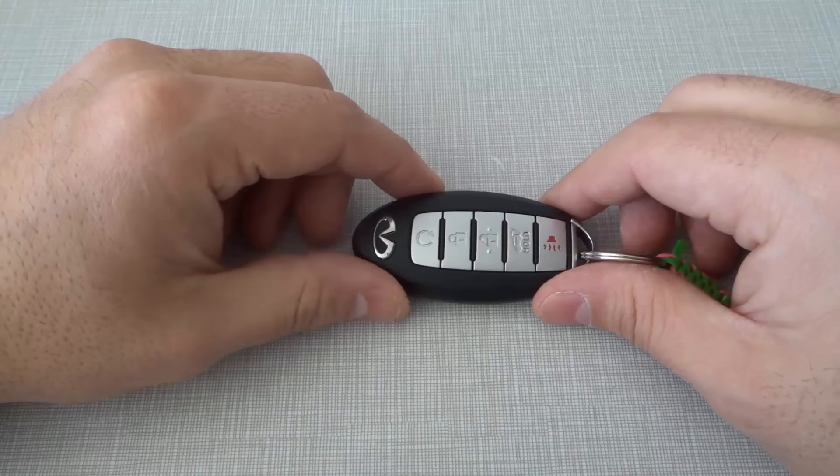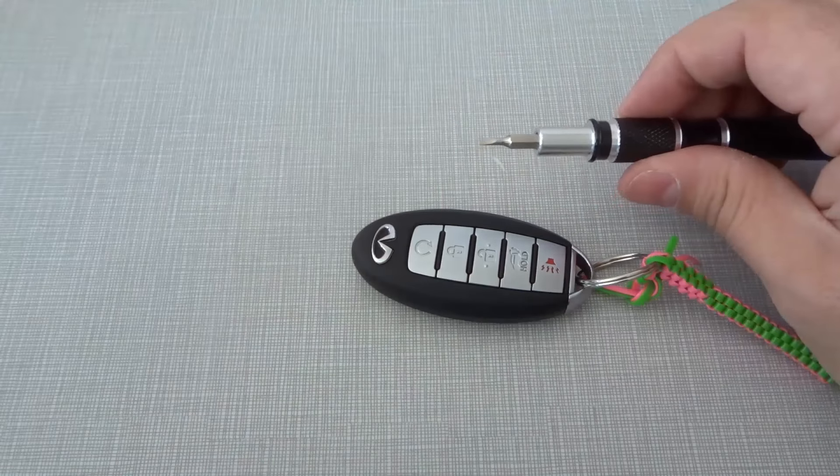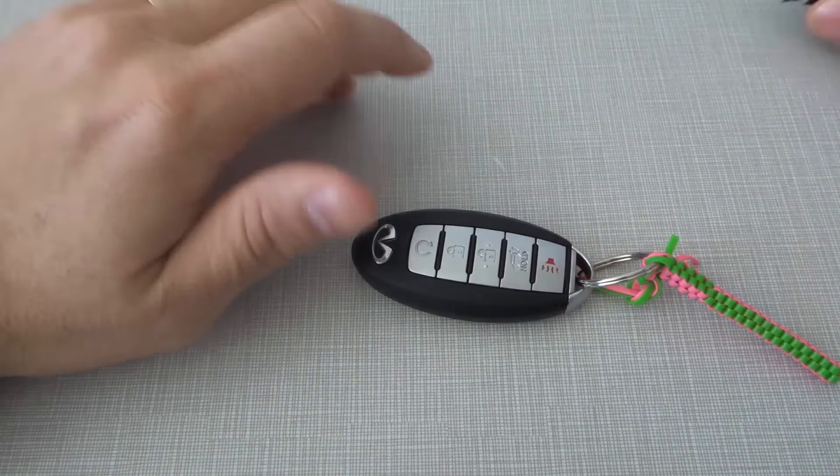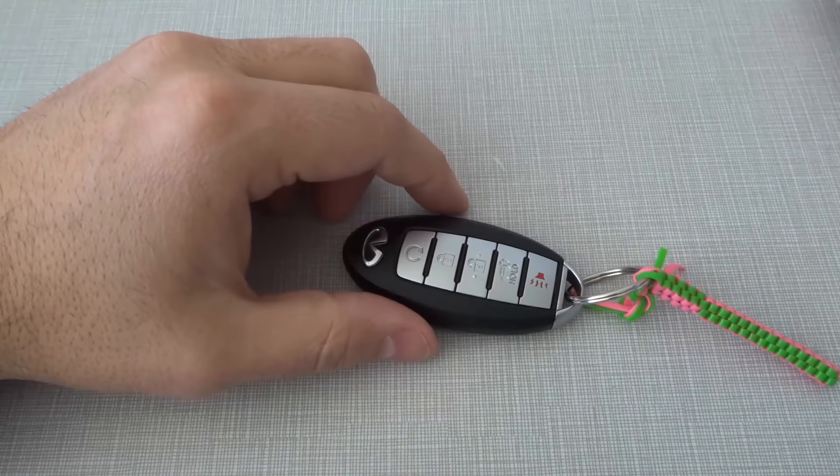It's actually a really simple process. All that you really need is a small flathead screwdriver, or you can even just use your nails if you have long enough nails and they're strong enough to open up this key fob. Now let's get right to it.